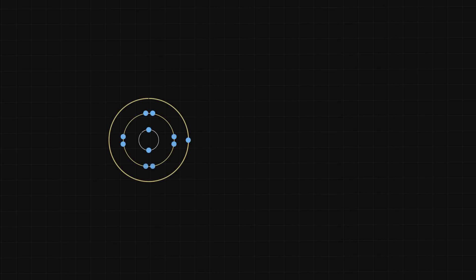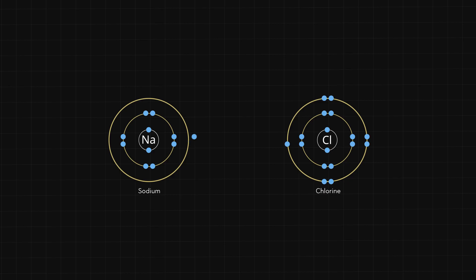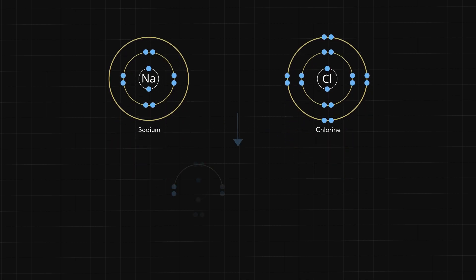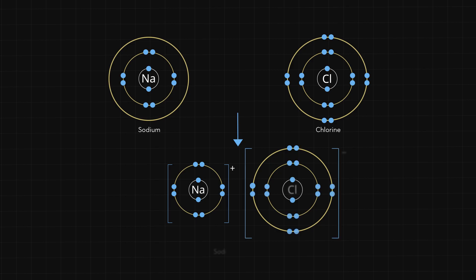An ionic bond is a very different beast. It arises when instead of sharing electrons between two atoms, electrons are transferred between atoms. Let's take table salt, sodium chloride. Instead of sharing electrons, an electron is transferred from the sodium atom to the chlorine atom. When the sodium atom loses an electron, it becomes a positively charged ion or cation. And when the chlorine atom gains an electron, it becomes a negatively charged ion or anion. These opposite charges attract each other, leading to a strong electrostatic interaction. It makes sense to call it an ionic bond because the interaction between the cation and anion is at least as strong as that in a covalent bond.